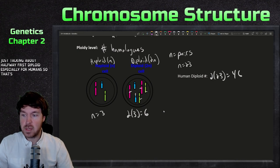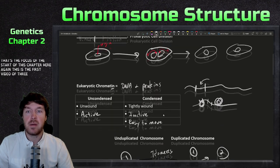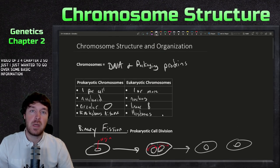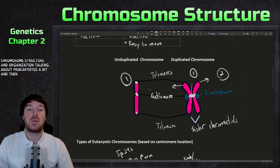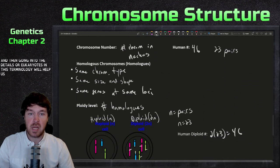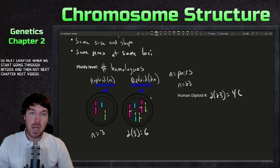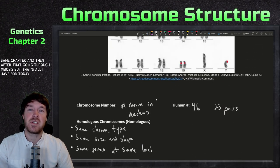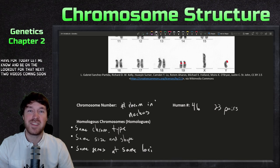That's the focus of the start of this chapter. Again, this is the first video of three for chapter two — just covering basic information about chromosome structure and organization, comparing prokaryotes and eukaryotes. This terminology will help us in the next video when we go through mitosis, and then meiosis after that. If you have any questions, please let me know and be on the lookout for the next videos coming soon. Talk to you later, bye-bye.